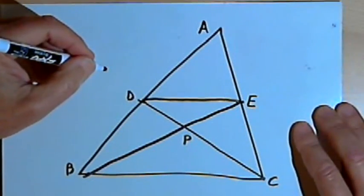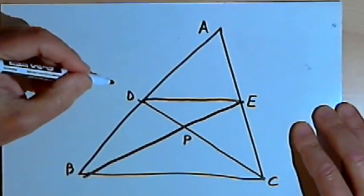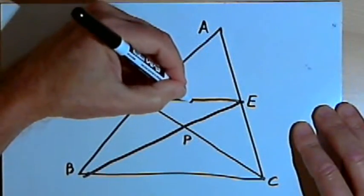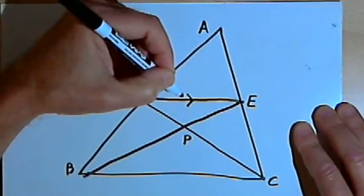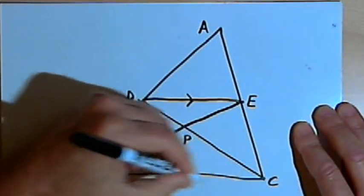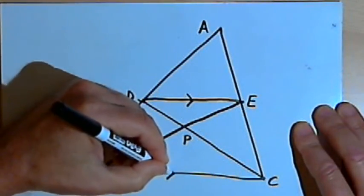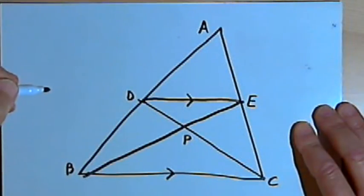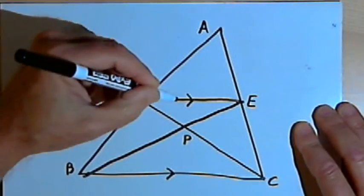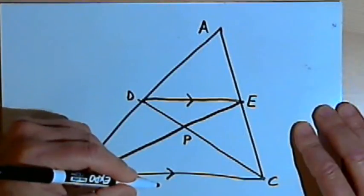The mid-segment theorem tells me two things about this. It tells me that line DE is parallel to the third side. It's parallel to side BC. It also tells me it's half as long as side BC.